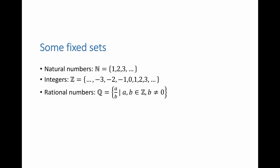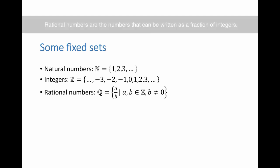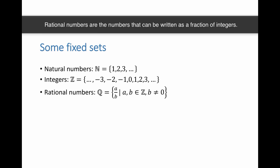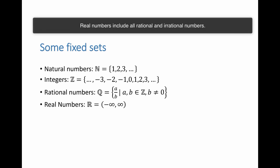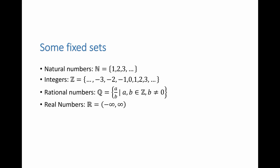The Gothic letter Q is reserved for the set of rational numbers, which are the numbers that can be written as a fraction of integers. Q is equal to a fraction A over B, where A and B are integers and B cannot be equal to 0. The Gothic letter R is reserved for the set of real numbers — between negative infinity and infinity — and the real numbers contain both rational and irrational numbers. For example, root 2 cannot be written as a fraction; it is a real number but not a rational number.